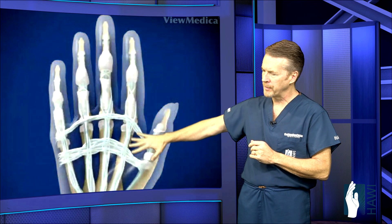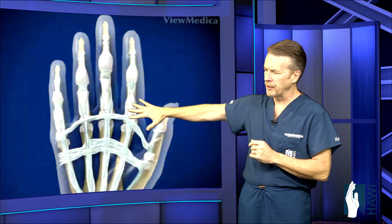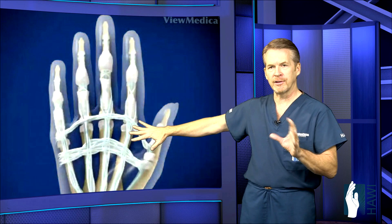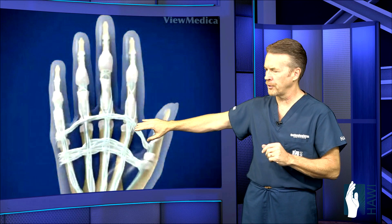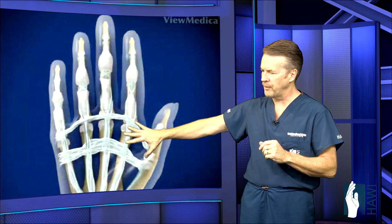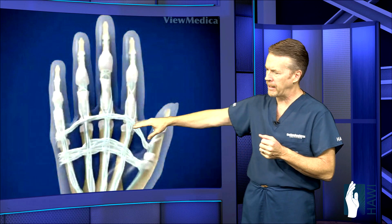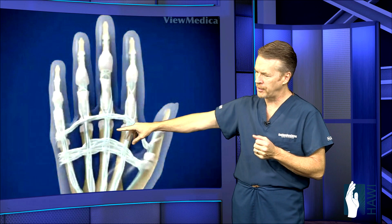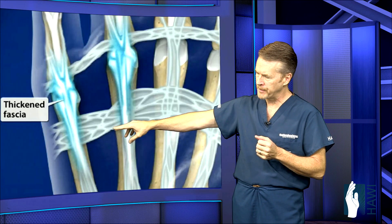Fascia is a thickened layer that kind of protects the tendons, nerves, and arteries of the hand. It's in this area that Dupuytren's disease can cause a proliferation or thickening of the fascia, as you can see in the next image.